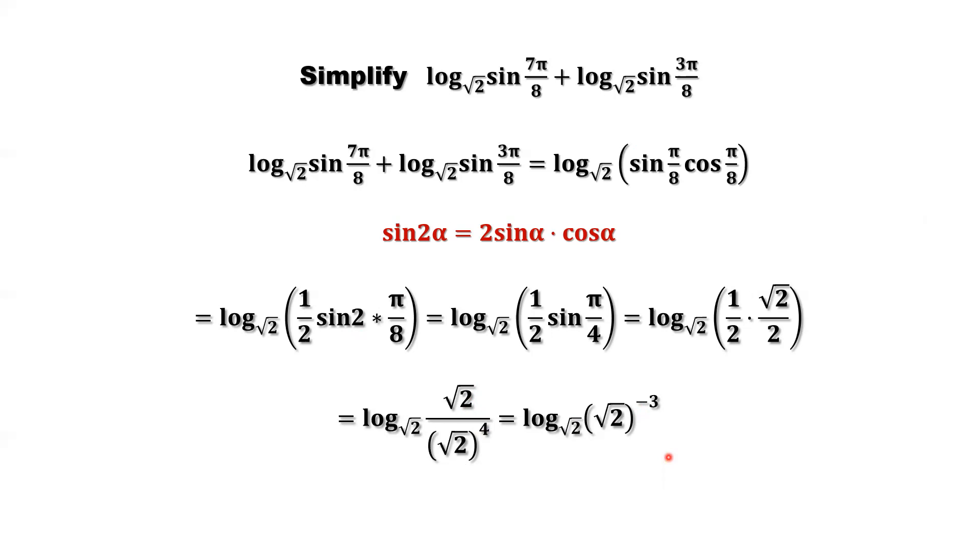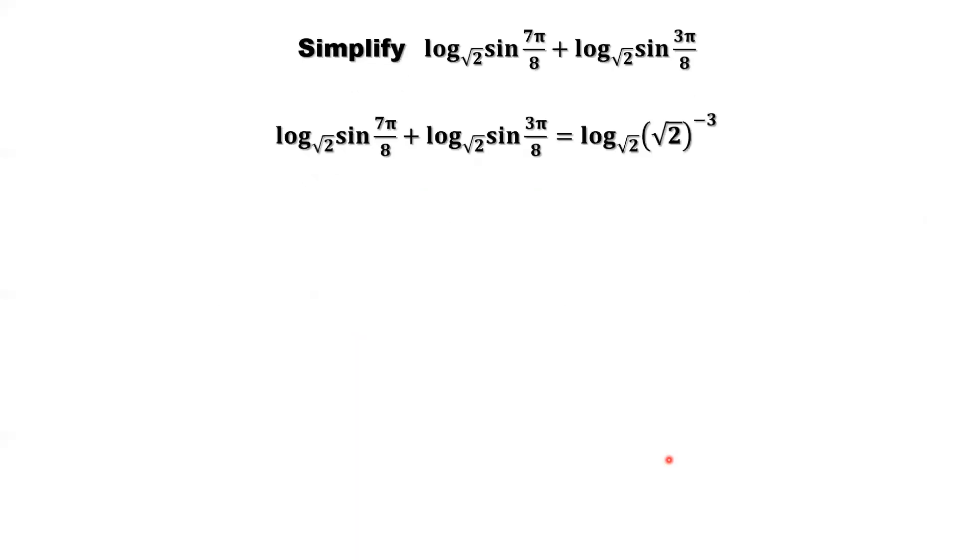Which formula we can use now? We are here. This is the formula. Log of a, base a, b to the power x. We can bring this x from inside to upstairs, to downstairs, outside. So x times log b, base a. So in our situation, x is negative 3, b is square root of 2. Base is also square root of 2. We bring negative 3 outside, downstairs. That's negative 3.